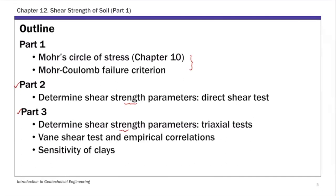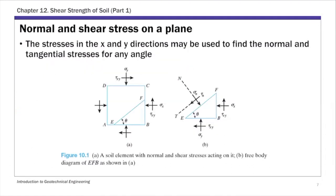For today, we're going to focus on this first concept. To introduce the Mohr circle of stress, let's look at a soil element. This small soil element is subjected to a combination of normal and shear stresses. We have vertical and horizontal normal stresses, and tau_xy are shear stresses. If you know the normal and shear stresses on these two planes, then you can find the normal and shear stresses on any plane.